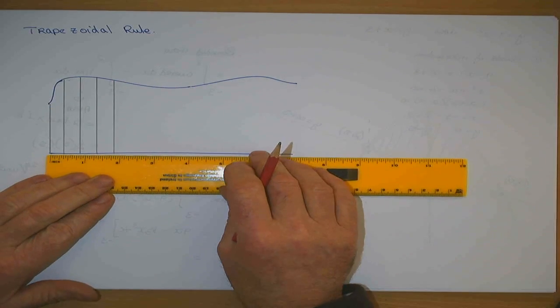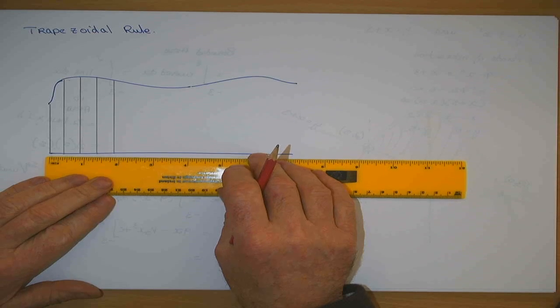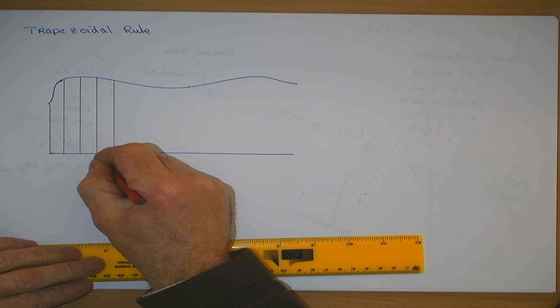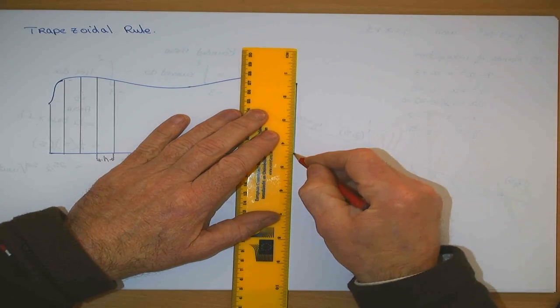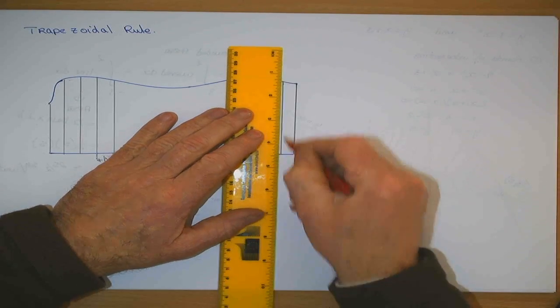Now, the distance between each one of my rectangles has to be consistent, and any one of them distance in the formula is H. H is known as the distance between each rectangle, and I keep going until I get my last rectangle.